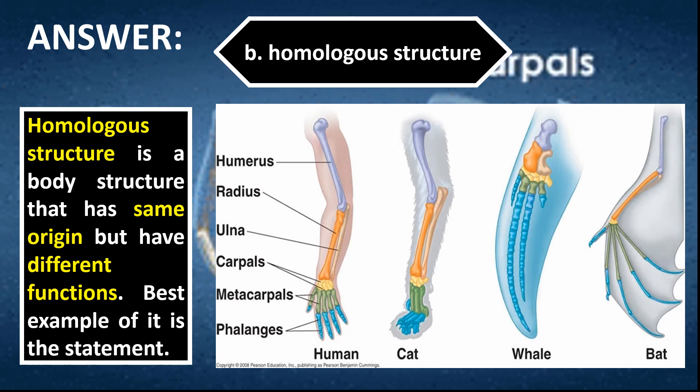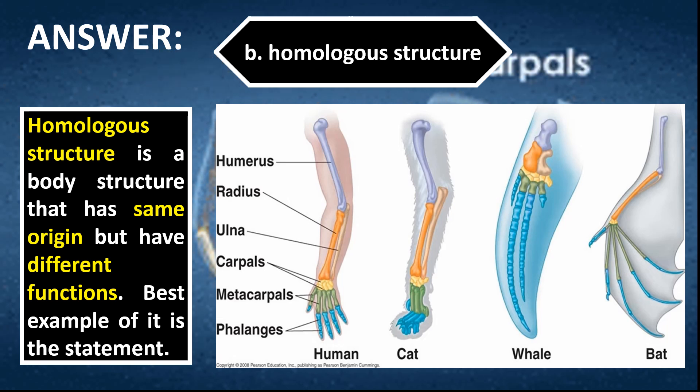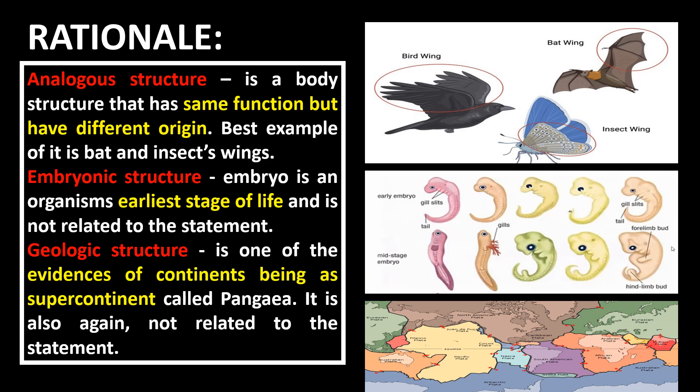The correct answer is letter B, Homologous structure. Homologous structure is a body structure that has the same origin but different functions — the forelimbs in the statement are the best example. Analogous structure refers to body structures that have the same function but different origin, such as bat and insect wings. Embryonic structure refers to an organism's earliest stage of life and is not related to the statement. Geologic structure is an example of evidence of continents being a supercontinent called Pangaea and is also not related to the statement.